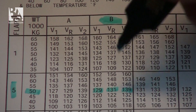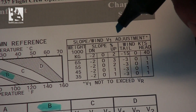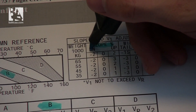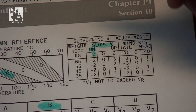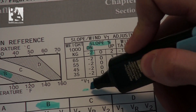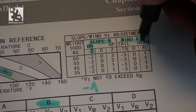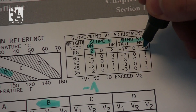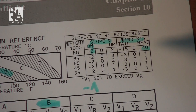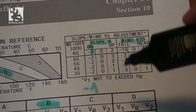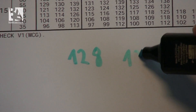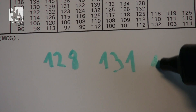Now knowing the V-speeds, we also have to check them against slope and wind. For slope, let's say we have a downward slope of 1% — because the table shows 2, we divide the number given by 2, giving us a correction of minus 1. For wind, let's say we have a 10-knot headwind. Because we only have 40 here, there is no adjustment at all. So our final V-speeds for this takeoff would be: V1 128 knots (129 minus 1), VR 131 knots, and V2 139 knots.